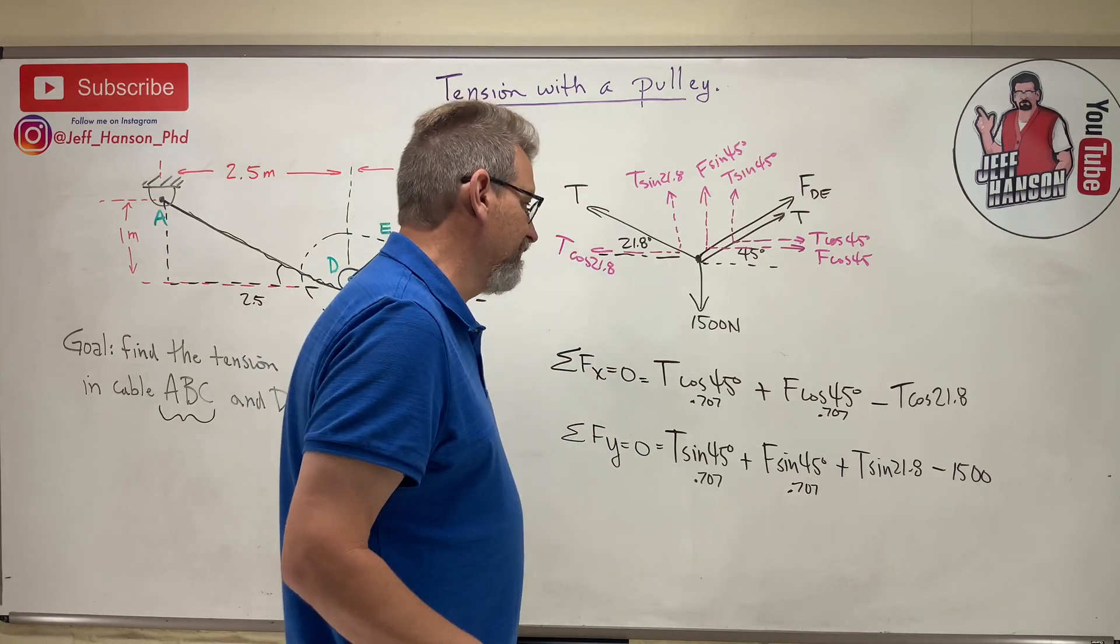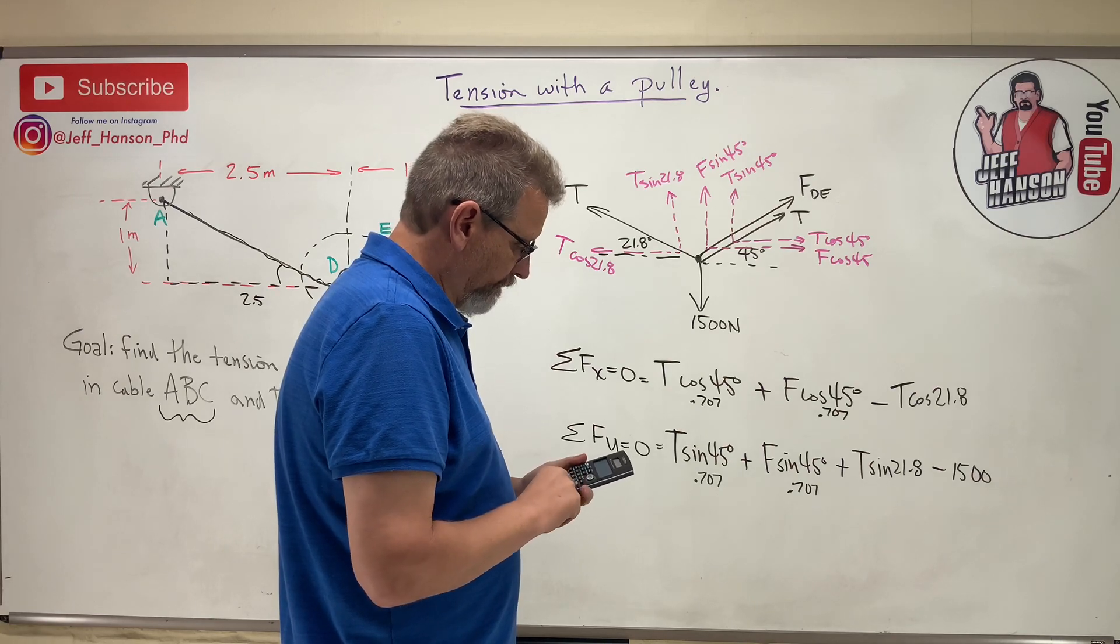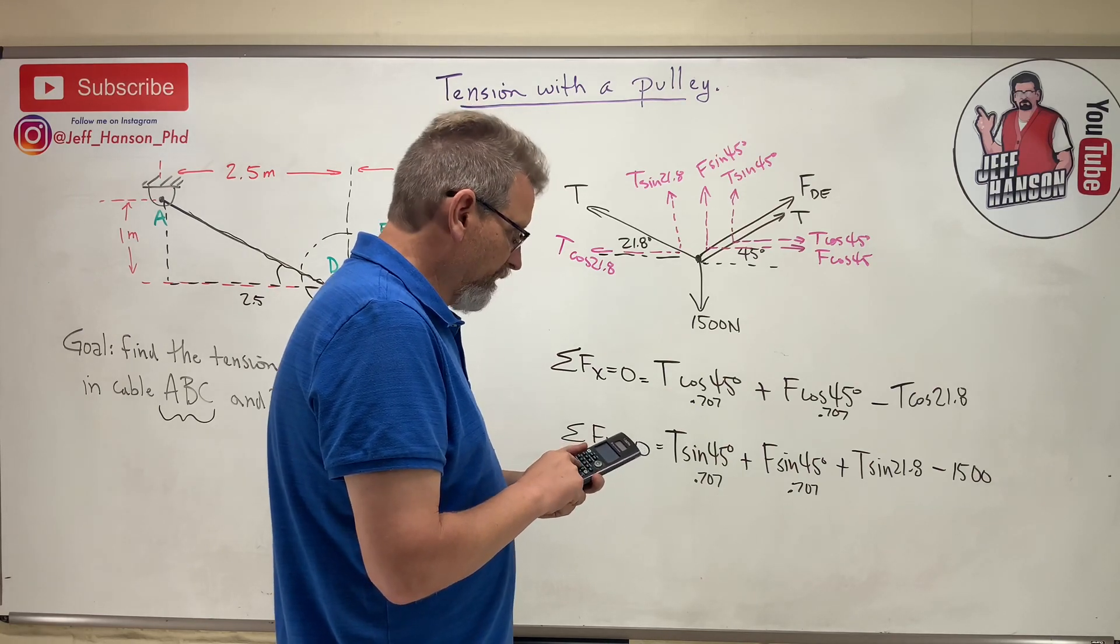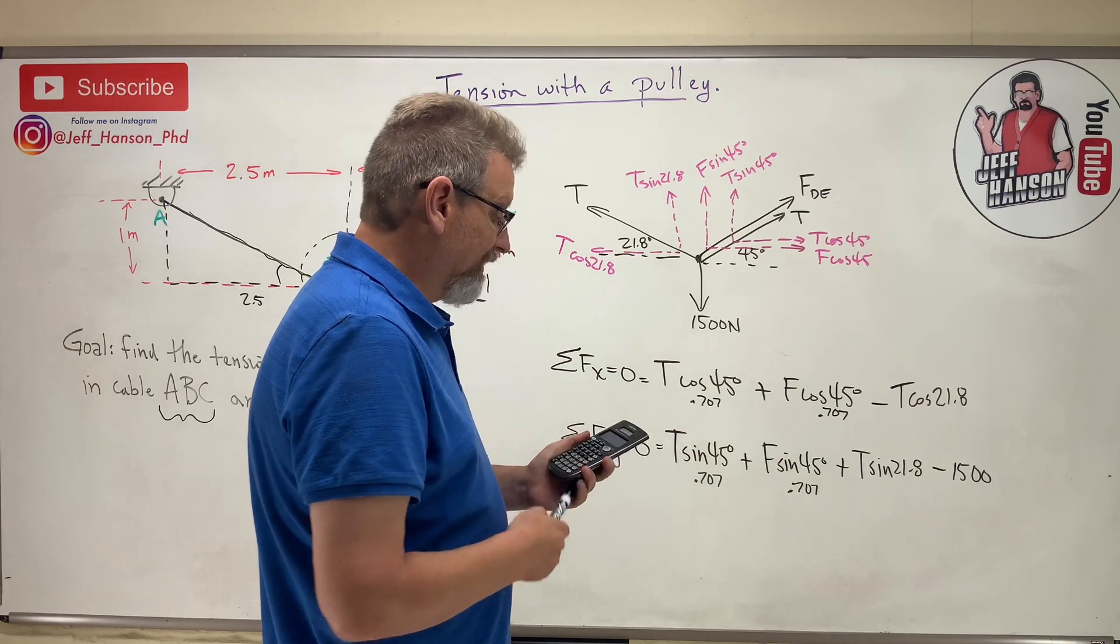Clear, clear, clear, clear, clear. Cosine of 21.8 is 0.928. 0.928, okay.